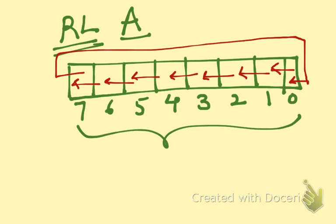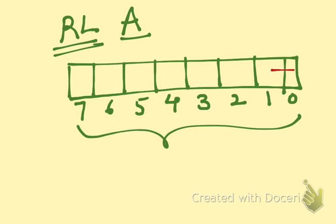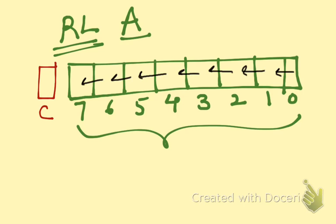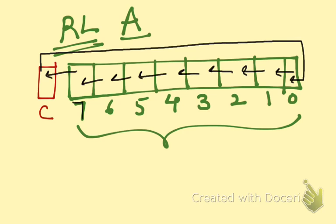When you are using the rotate left operation, you can use the simple RLA or you could also use it with a carry. When you are using a carry flag or a carry bit, you have an additional bit, which is your carry flag. The transfer goes like this: zero to one, and so on. The data in seven goes to the carry flag, and what is stored in the carry flag goes to zero. So whatever is stored in seven goes into the carry flag, and whatever has been in the carry flag goes into the zeroth bit. This is how a rotate left operation works with a carry flag.